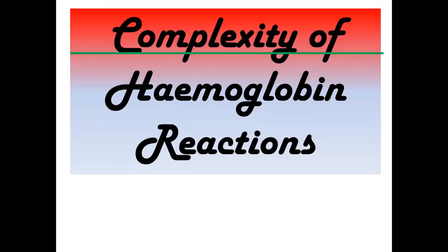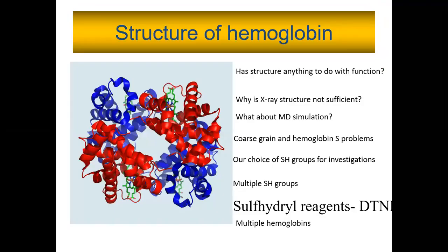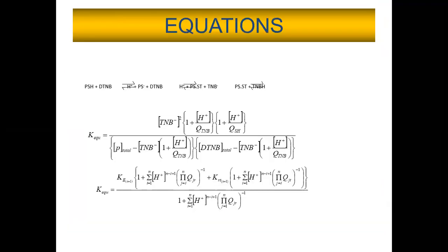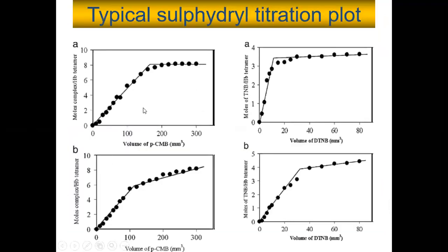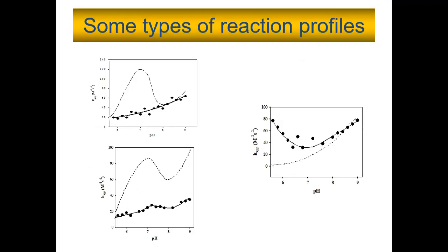Moving to the next topic — this is a simple structure of hemoglobin. It has four polypeptide chains. When you have a molecule reacting, this is the typical equation and formula for calculating. Normally, we react this with DTNB because we use sulfhydryl agents to react with the sulfhydryl group in hemoglobin. We look at the beta-93 cysteine residue specifically. So we have all these complex reaction profiles.